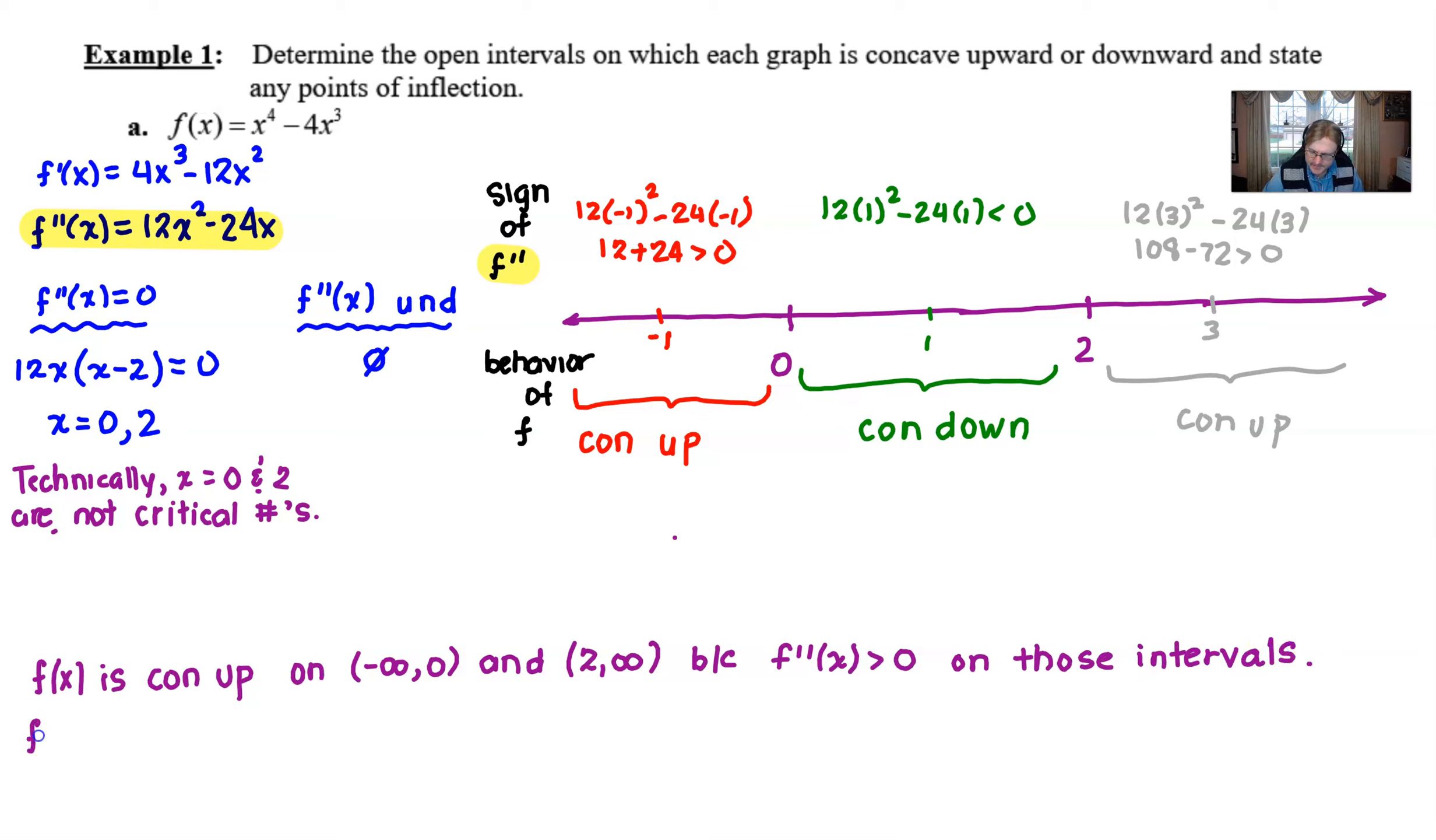Now we'll do the same thing when we mention f of x being concave downward. We'll abbreviate con down. It turns out that there's only one interval of concavity that's downward and that's on the open interval zero to two. And the reasoning is because f double prime of x is less than zero on that interval. And I'll tell you what, it's probably quicker just to list the interval by name than to write the words that interval.